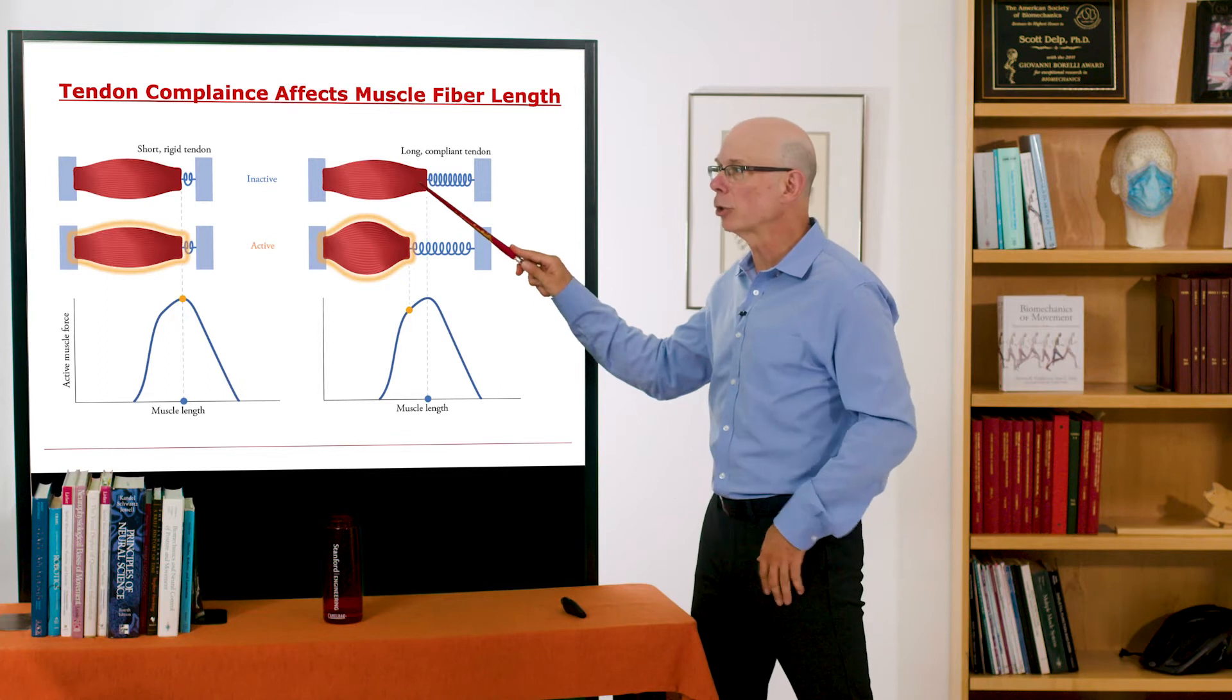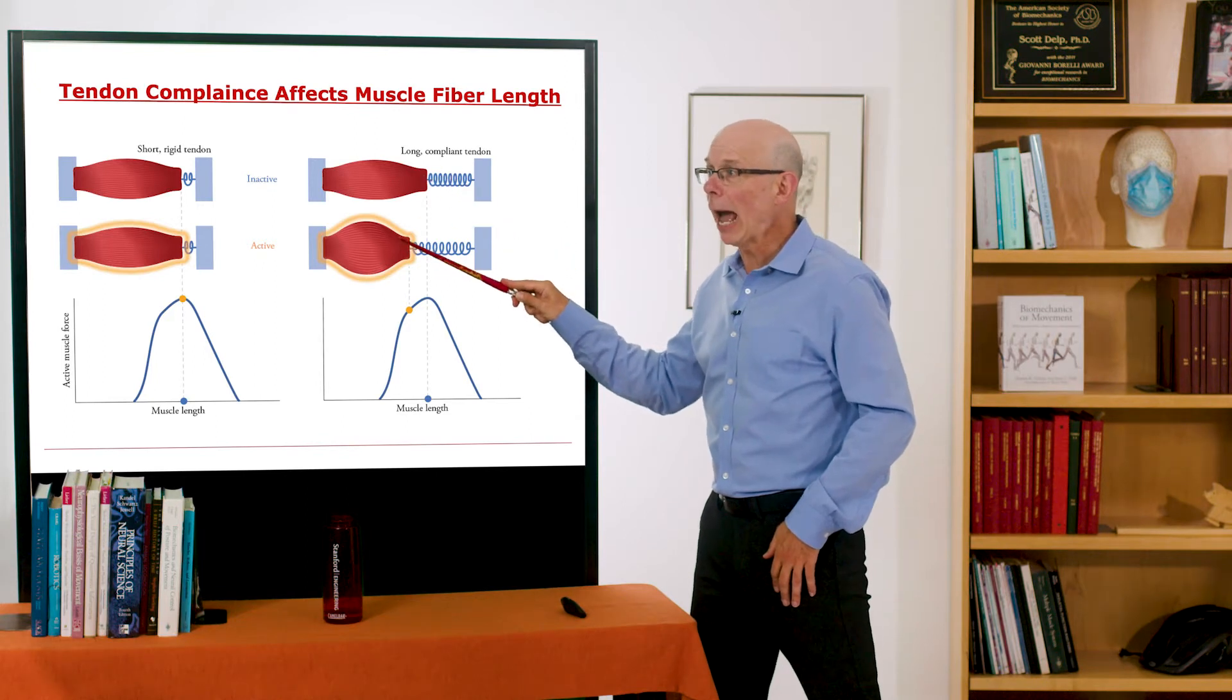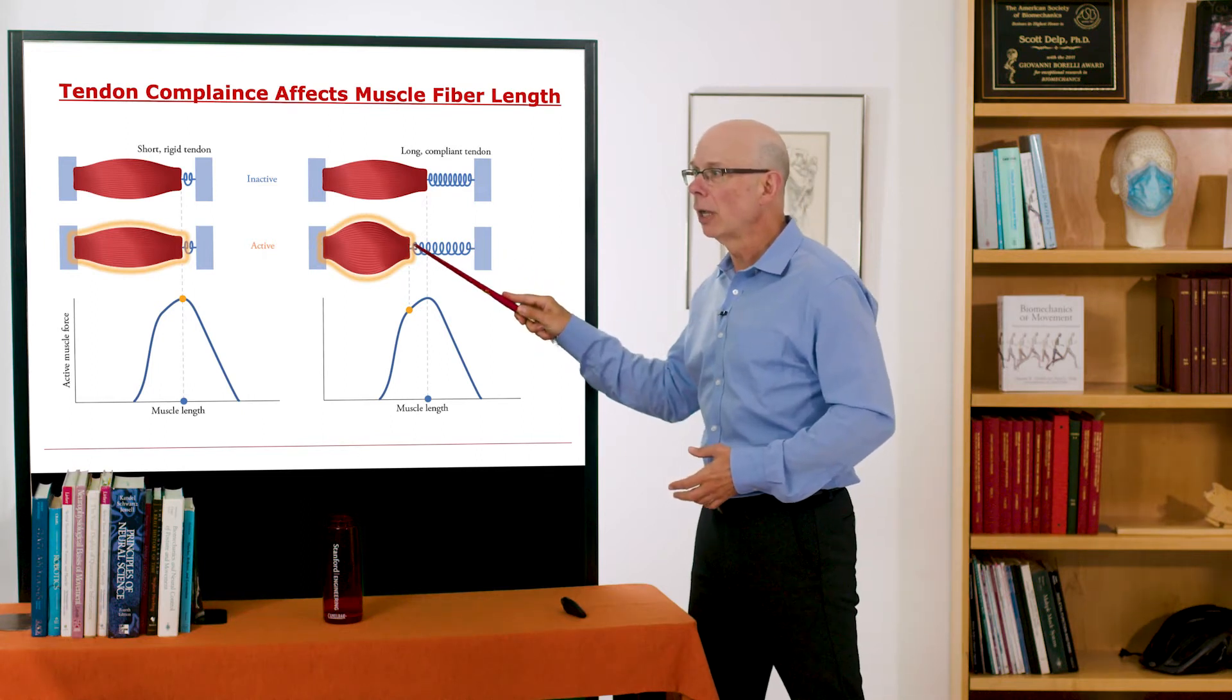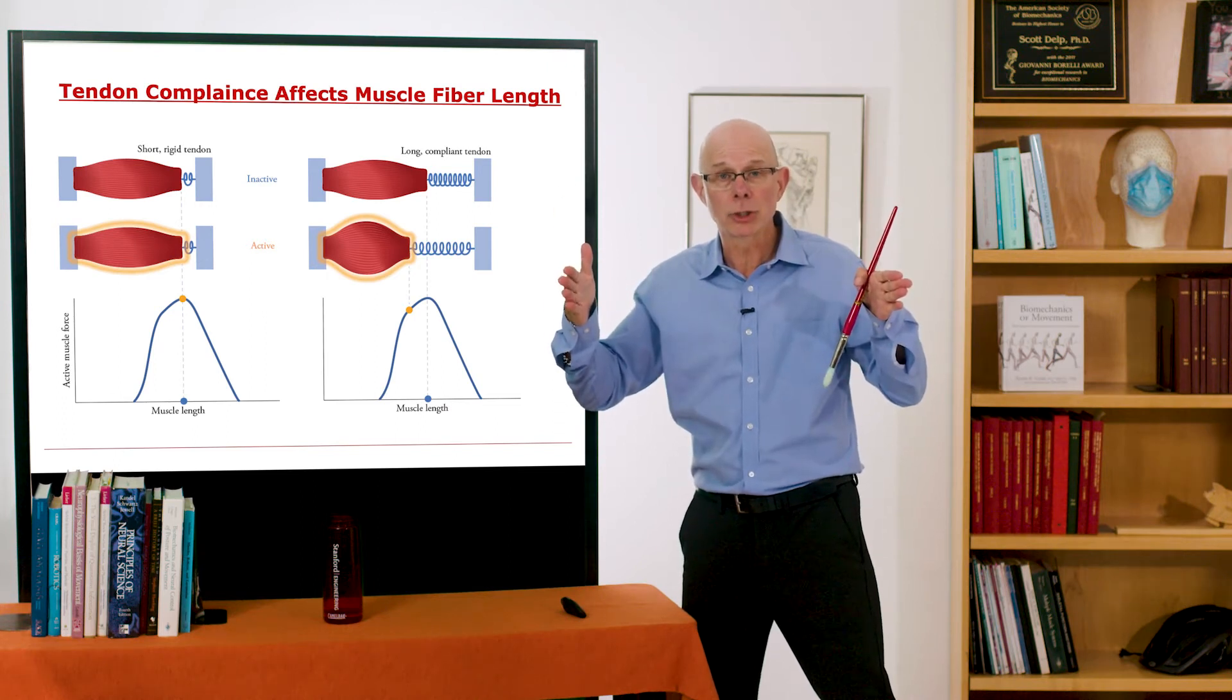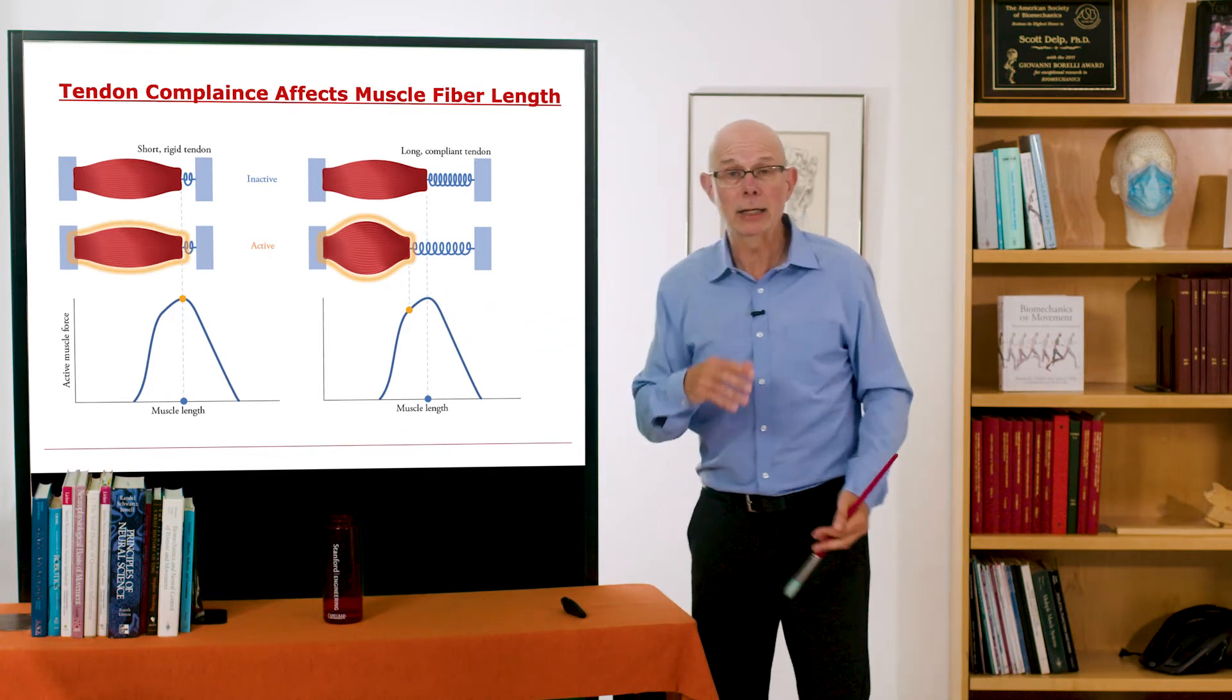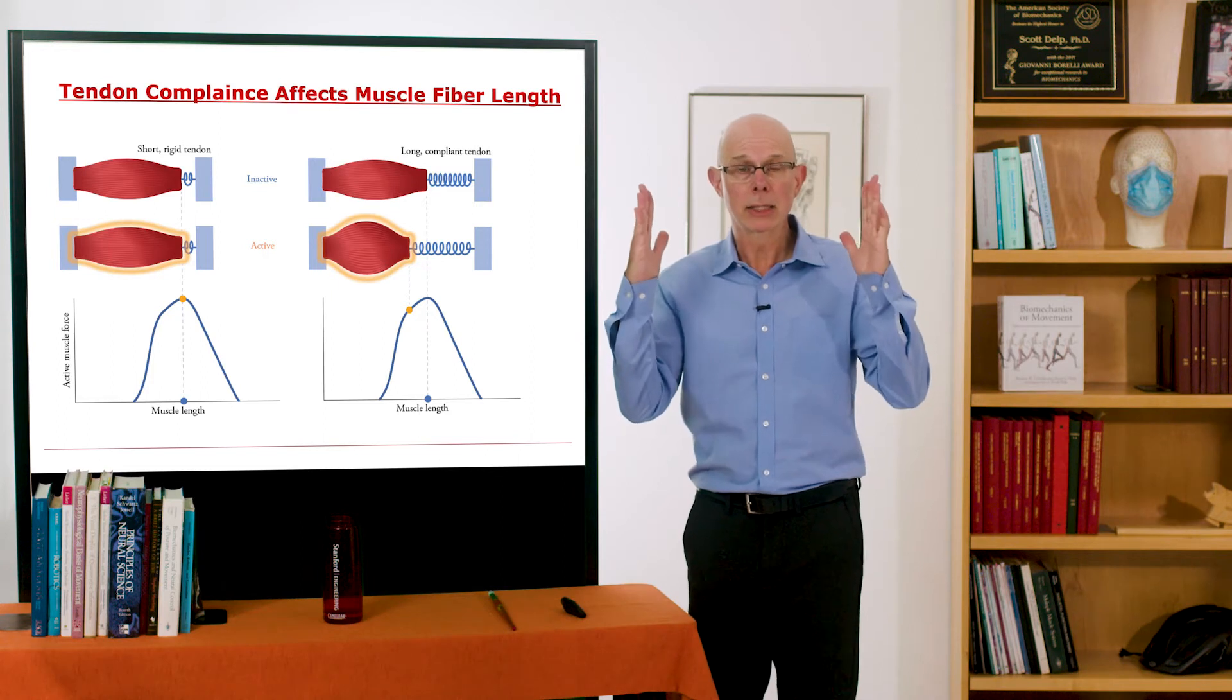Remember, tendon is like a nonlinear spring. So in this other muscle-tendon complex, we have a long, compliant tendon. And now when I activate that, shown with the signified in the orange circumference there, the tendon stretches. When that muscle-tendon length stays the same and the tendon stretches, the fibers actually shorten. So the muscle-fiber length went from here to here. So you're going to get a different length and a different force.